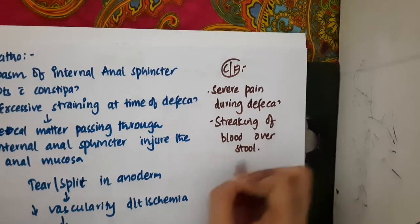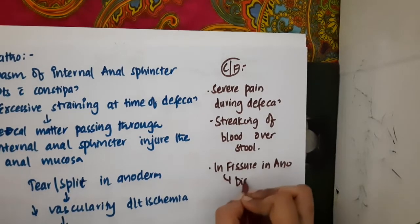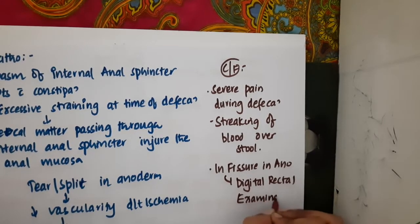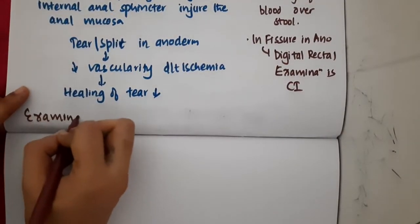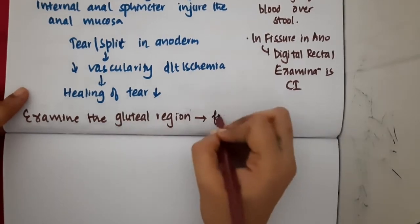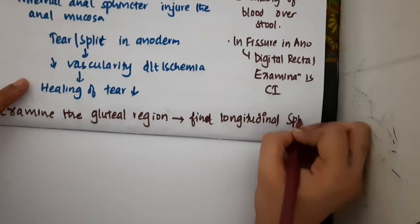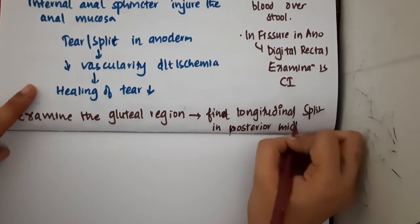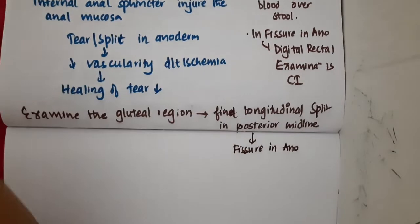One important point: in fissure in ano, digital rectal examination is contraindicated. To confirm the diagnosis, you will have to examine the gluteal region. If you find a longitudinal split in the posterior midline, then you can confirm it as fissure in ano.